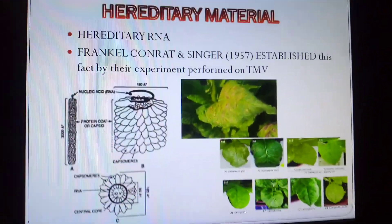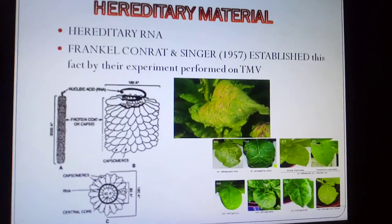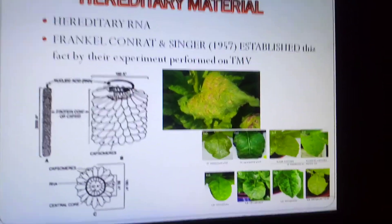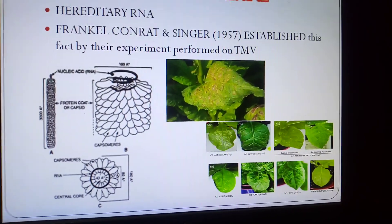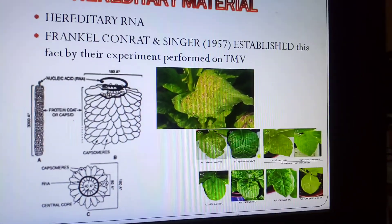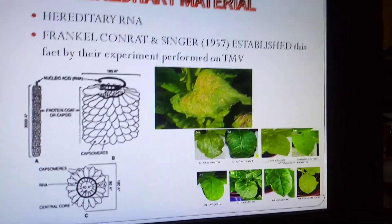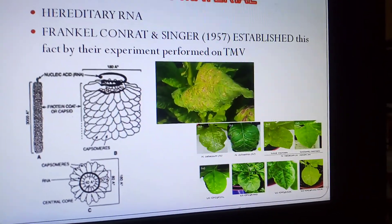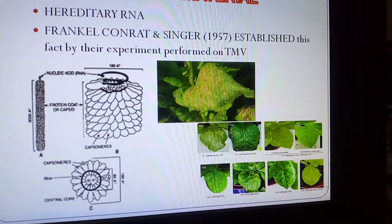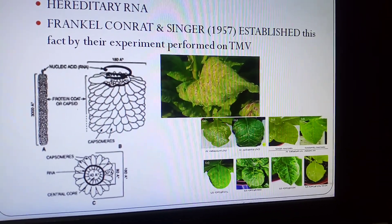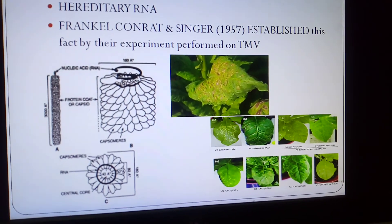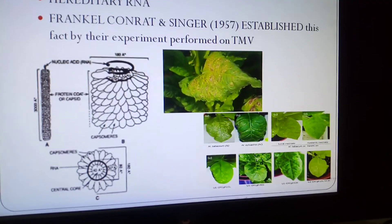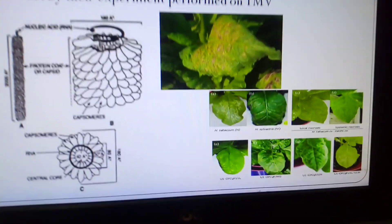RNA can also serve as hereditary material. In plants, Fraenkel-Conrat and Singer in 1957 established this fact through their experiment performed on TMV — the tobacco mosaic virus. This virus infects plant leaves. TMV is a circular structure with a protein coat or capsid and is 300 angstroms long.